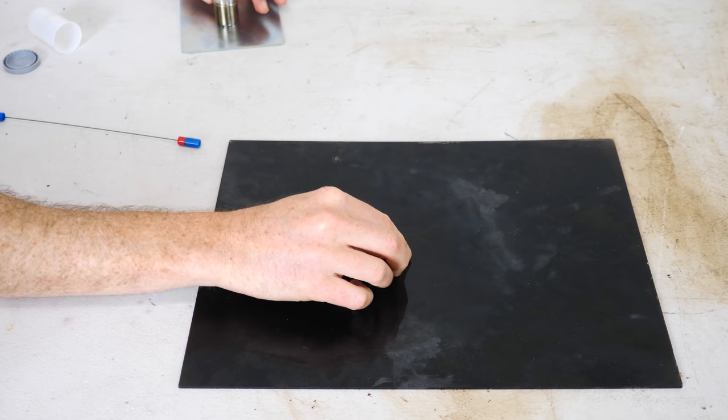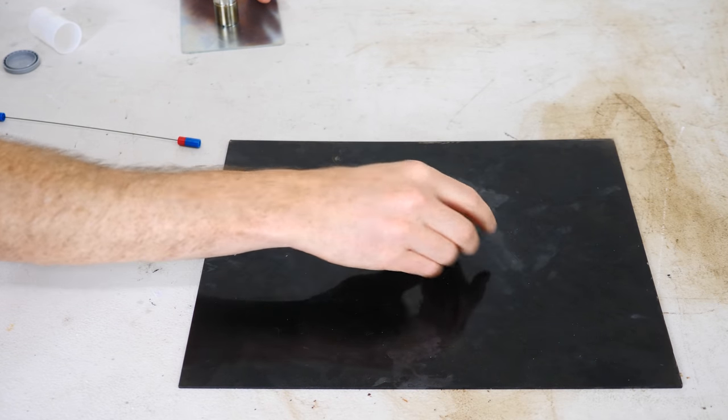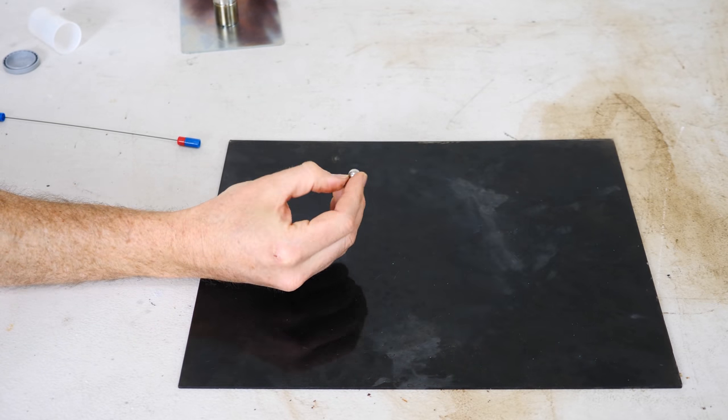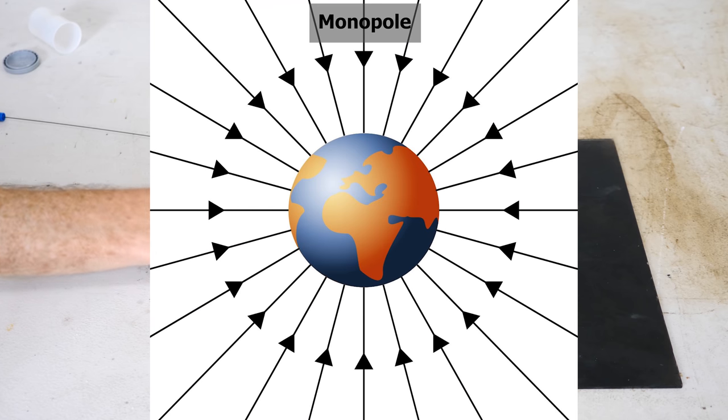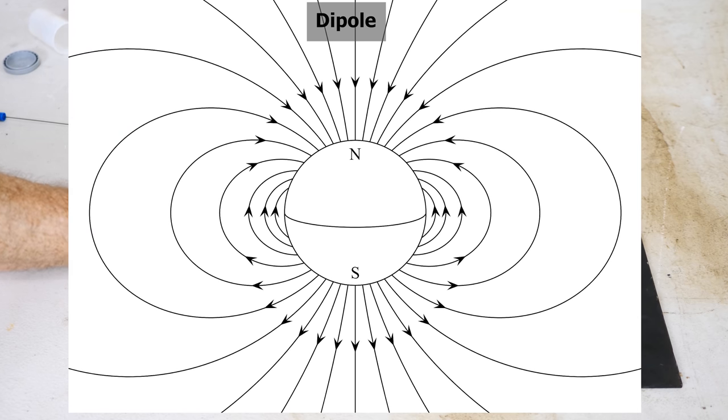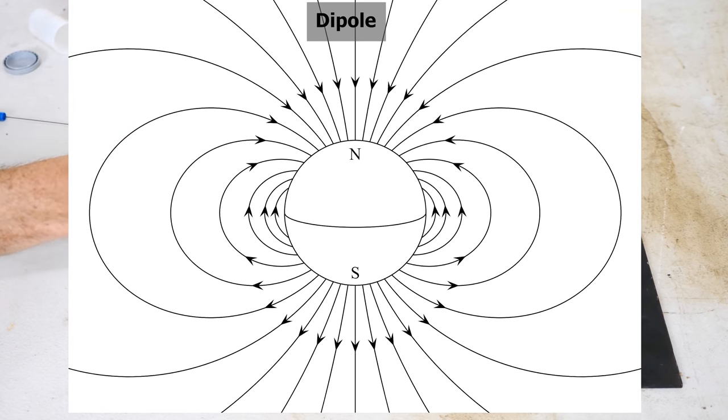Now, the reason this isn't working is because magnets are a dipole as opposed to a gravitational field like a gravitational body, which is a monopole, which means that the field extends out in all directions equally. But for a dipole like magnets, the magnetic field looks like this. So if you try to orbit around it, you can see that you're passing through different strengths of magnetic fields pointing in different directions. So the magnetic field changes depending on where you are around it.